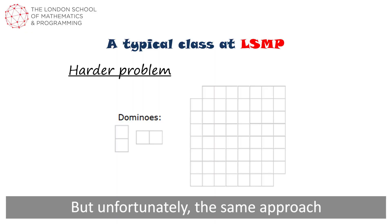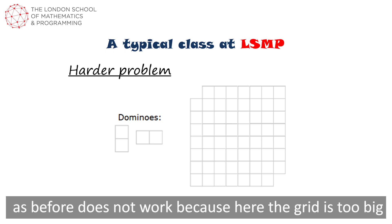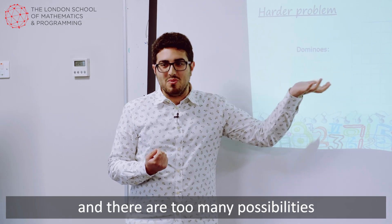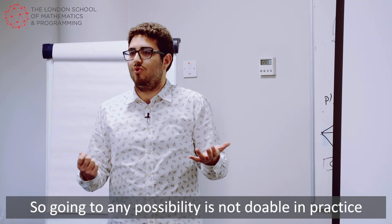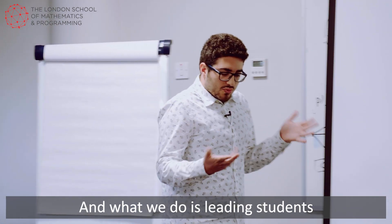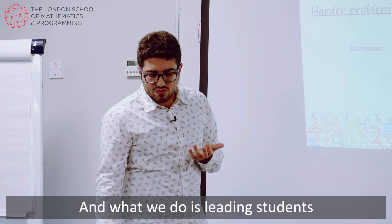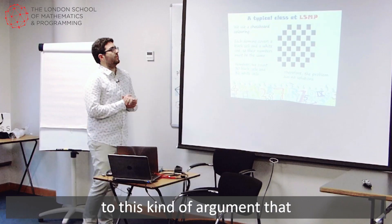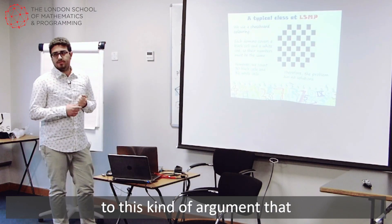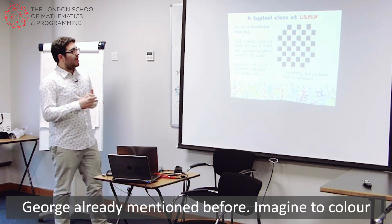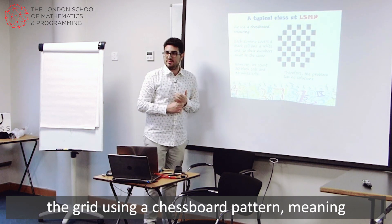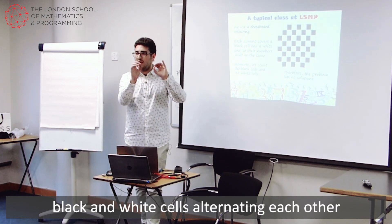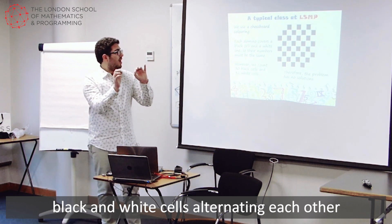But unfortunately the same approach as before doesn't work. Because here the grid is too big. And there are too many possibilities. So going through any possibilities is not doable in practice. And what we do is leading students to this kind of argument that George already mentioned before. Imagine to color the grid using a chessboard pattern. That means black and white cells alternating each other.